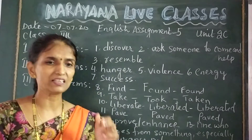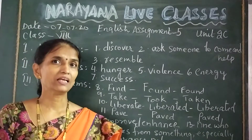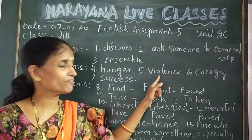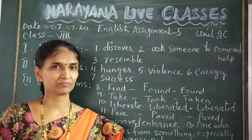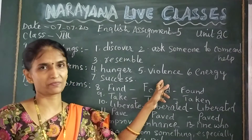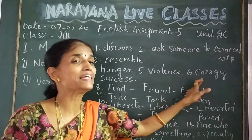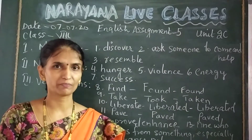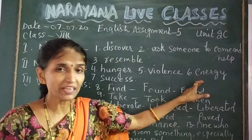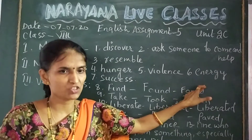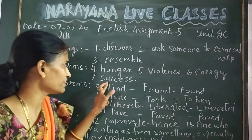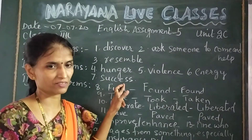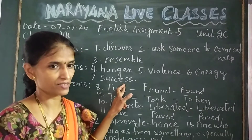The first adjective given is 'hungry'. The noun form of hungry is hunger. The next adjective is 'violent' and its noun form is violence. The next adjective is 'energetic' and its noun form is energy. The next adjective is 'successful' and its noun form is success.